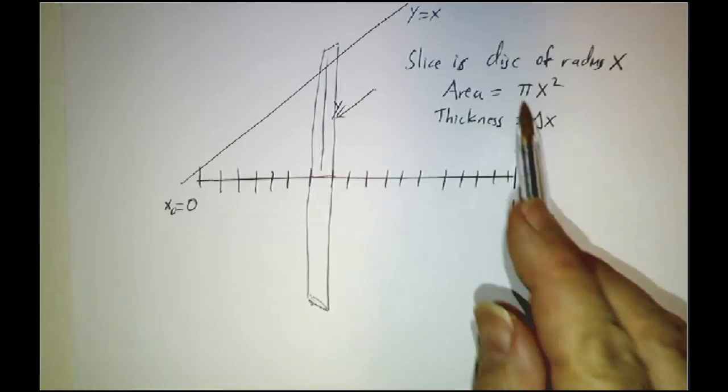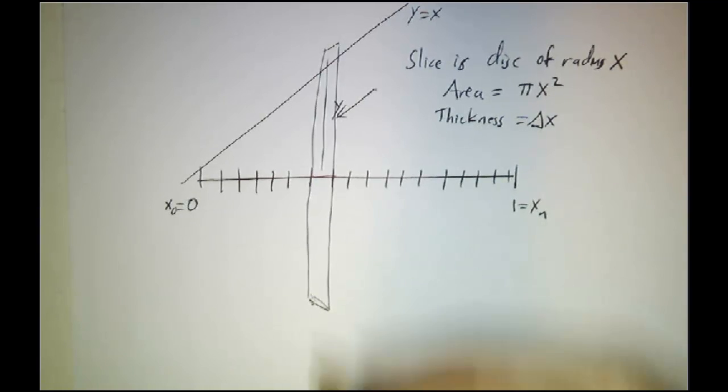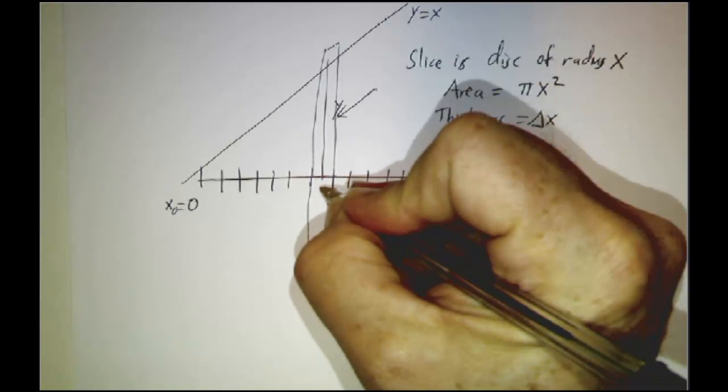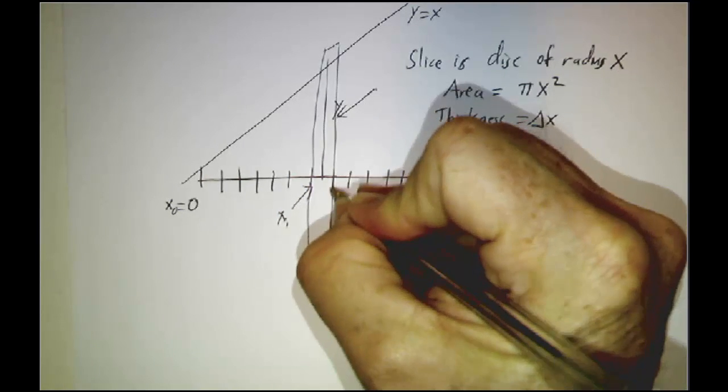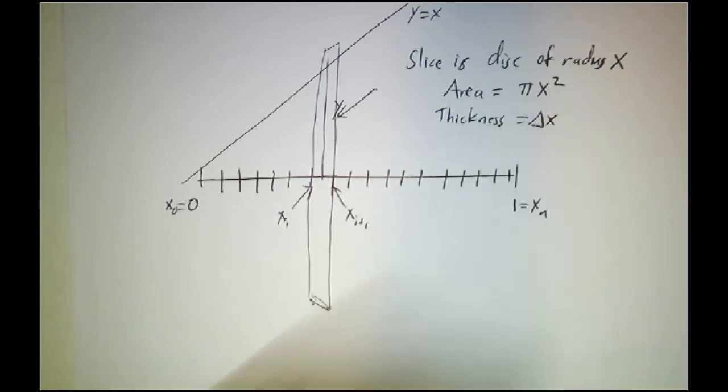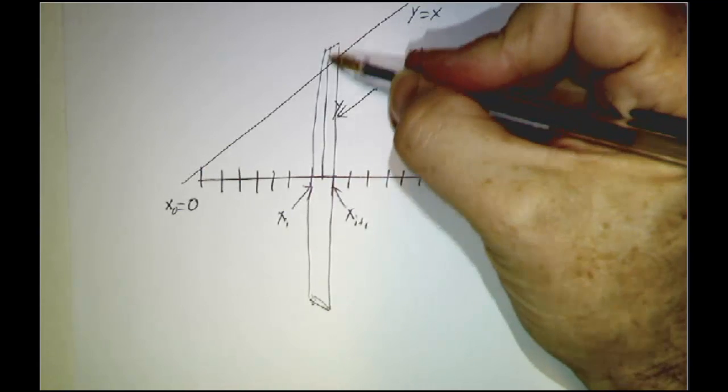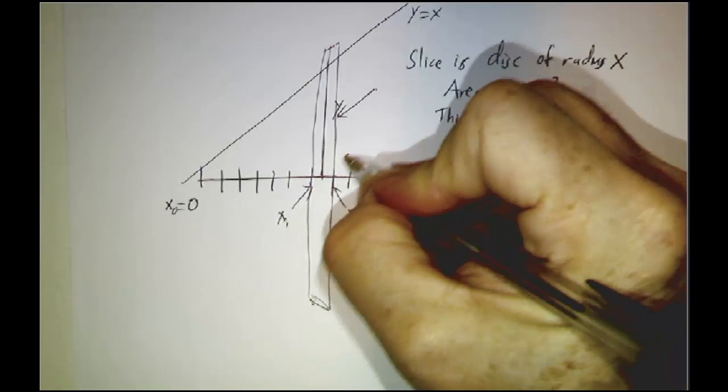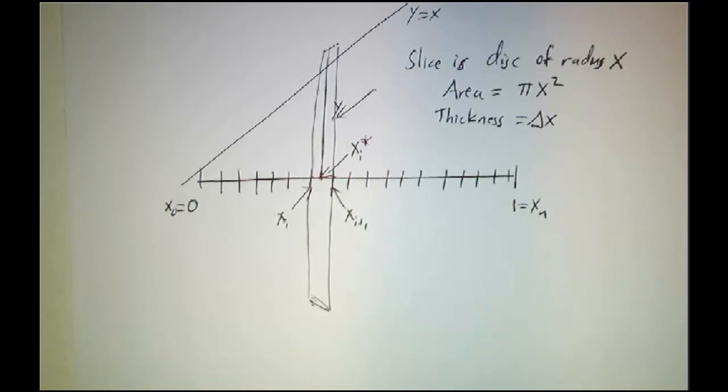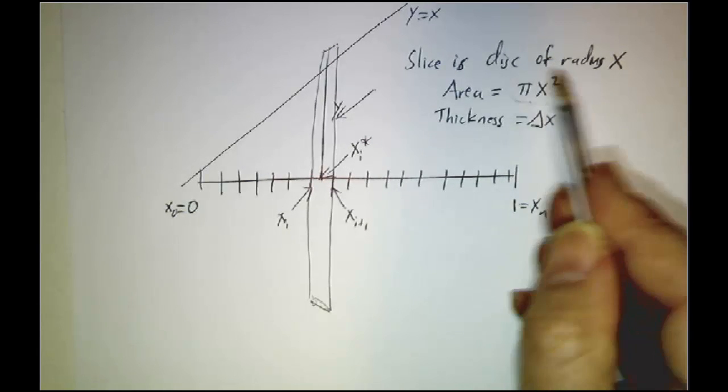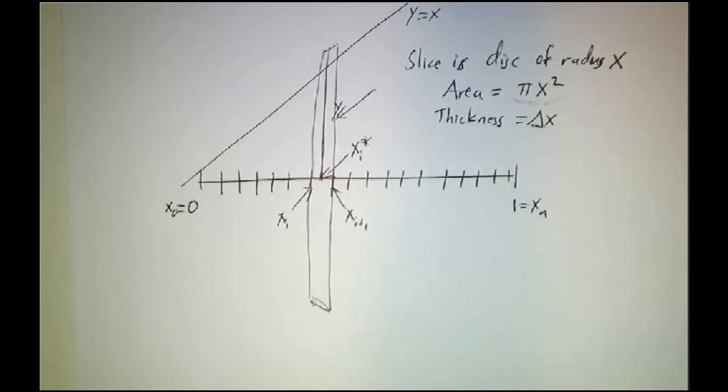And the thickness is delta x. Now, I've gotten a little bit sloppy with my notation. Really, I should say that I'm going to approximate it by picking, if this is xi and this is xi plus 1, I'm going to approximate the radius by some number in between xi star. But after you've done a few of these problems, you realize that you get the formula here. It's pi x squared times delta x.